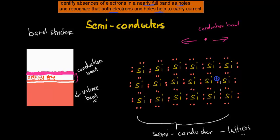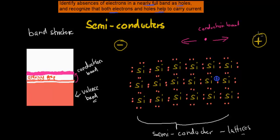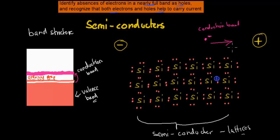Now, what will happen when we apply a voltage to this whole thing? If we have no voltage, the conduction band electrons will just move randomly in whatever direction they want — completely random. But if you apply a voltage, say the negative terminal is on one side and the positive terminal on the other, then because electrons are negatively charged, they're going to be attracted to the positive end. So the electron in the conduction band will move towards the positive terminal. Conduction electrons conduct electricity by moving from negative to positive.